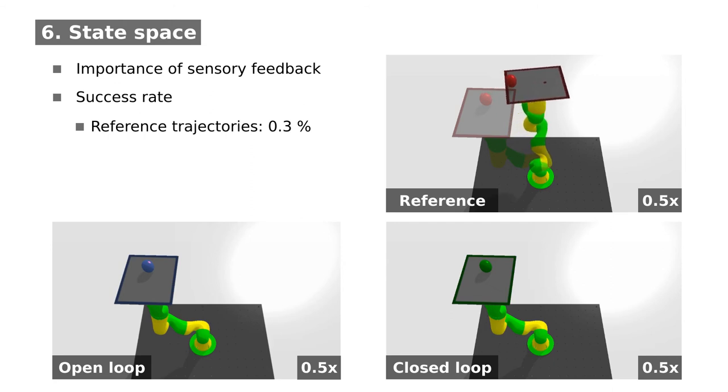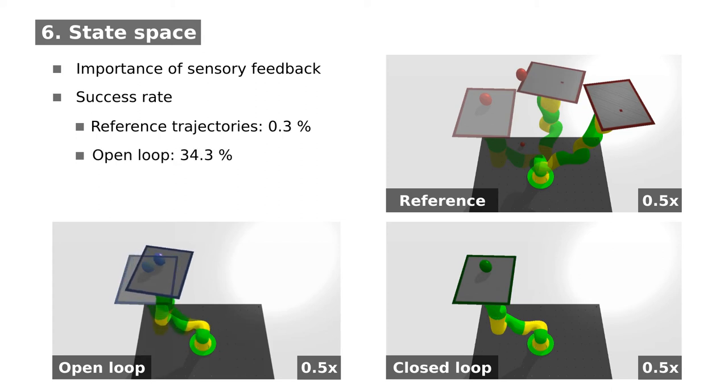As expected, the reference trajectories fail to balance the ball. For our first experiment, a network is trained with sensory feedback, but the ball position is not updated during the movement, which makes the network believe that the ball is at its target position. This open-loop setting leads to a success rate of 34%.